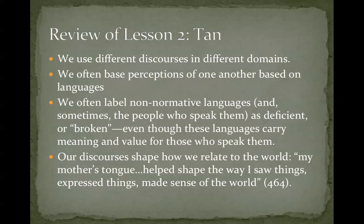Amy Tan shows how labeling non-normative languages as deficient or broken impacts how speakers are viewed. We see that when her mother tries to go to the doctor's office or communicate with her stockbroker and isn't able to accomplish what she needs to, even though she's very intelligent and has read up on the material. Because someone perceives her as deficient based on how she speaks, she doesn't have as much power as her daughter who speaks standard English. And finally, her mother's tongue helped shape the way she saw things, expressed things, and made sense of the world.